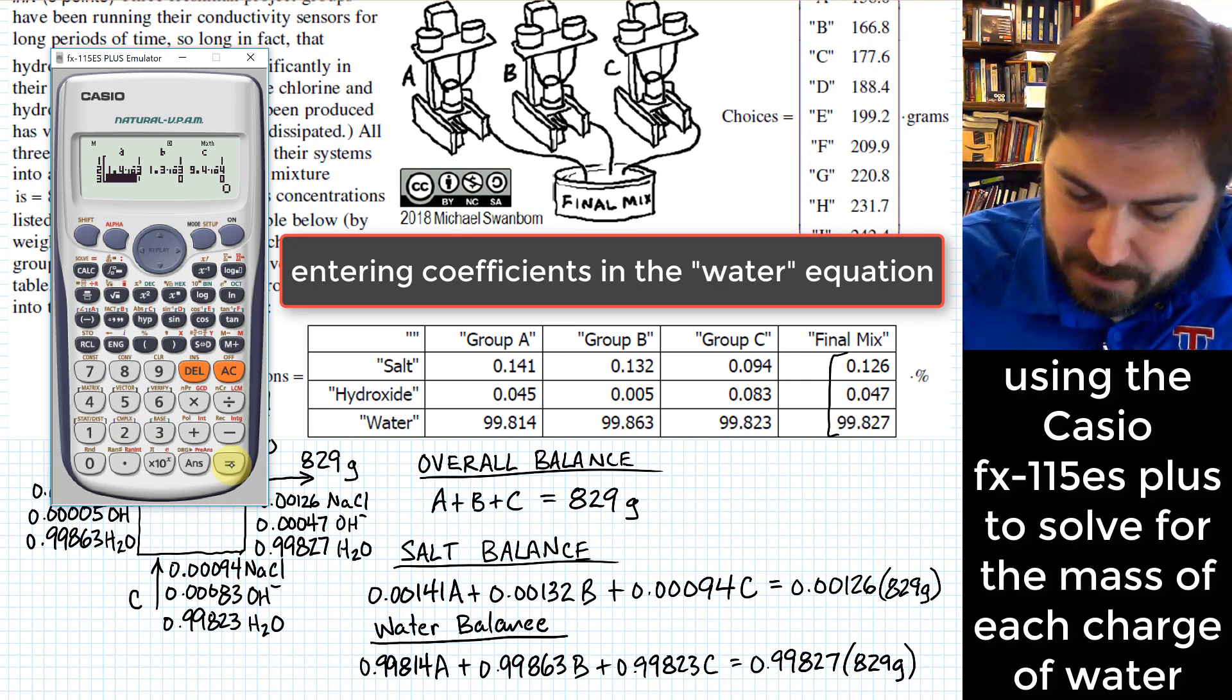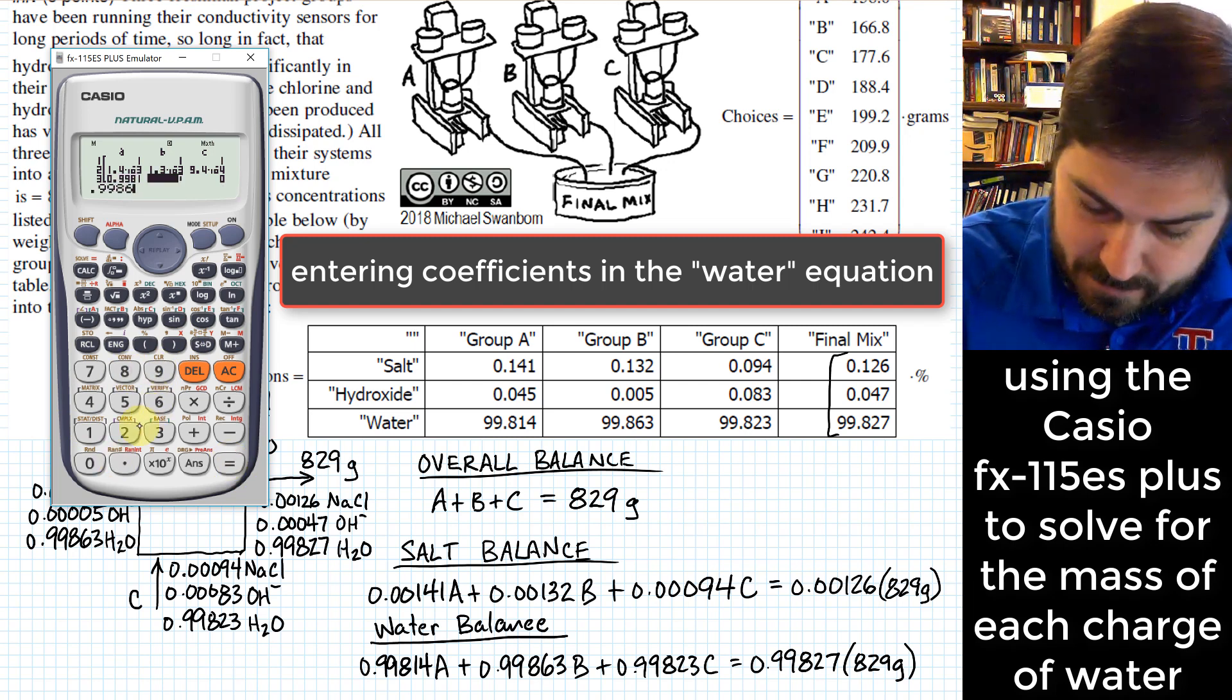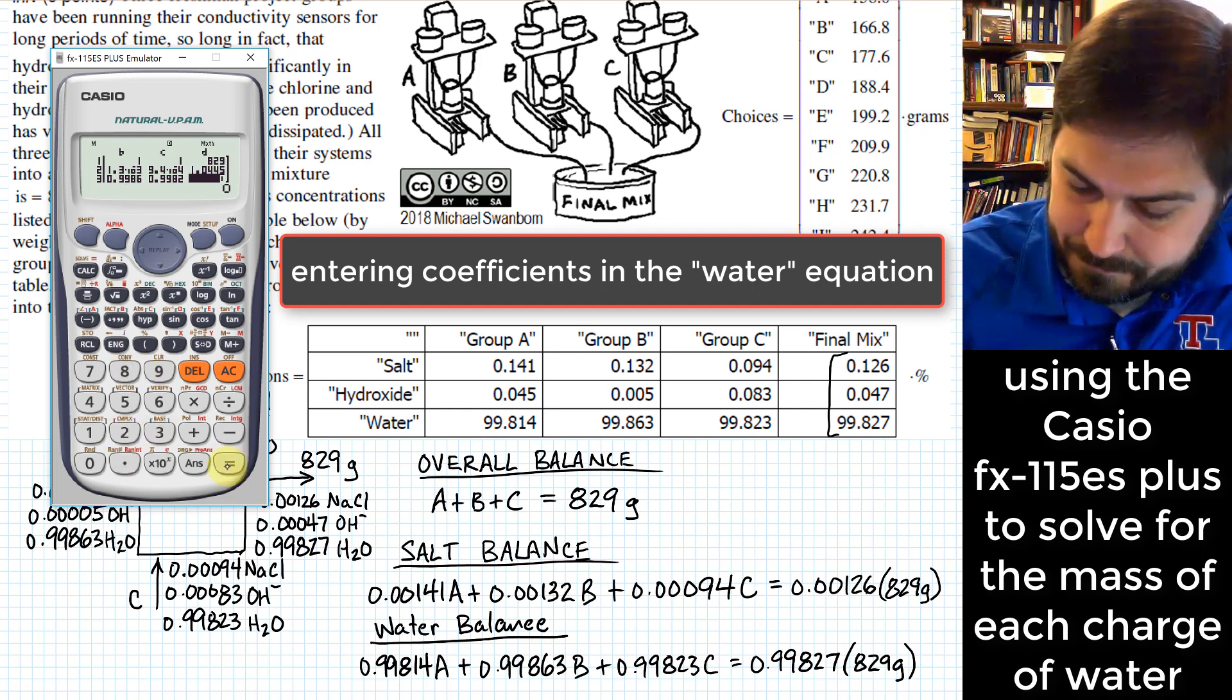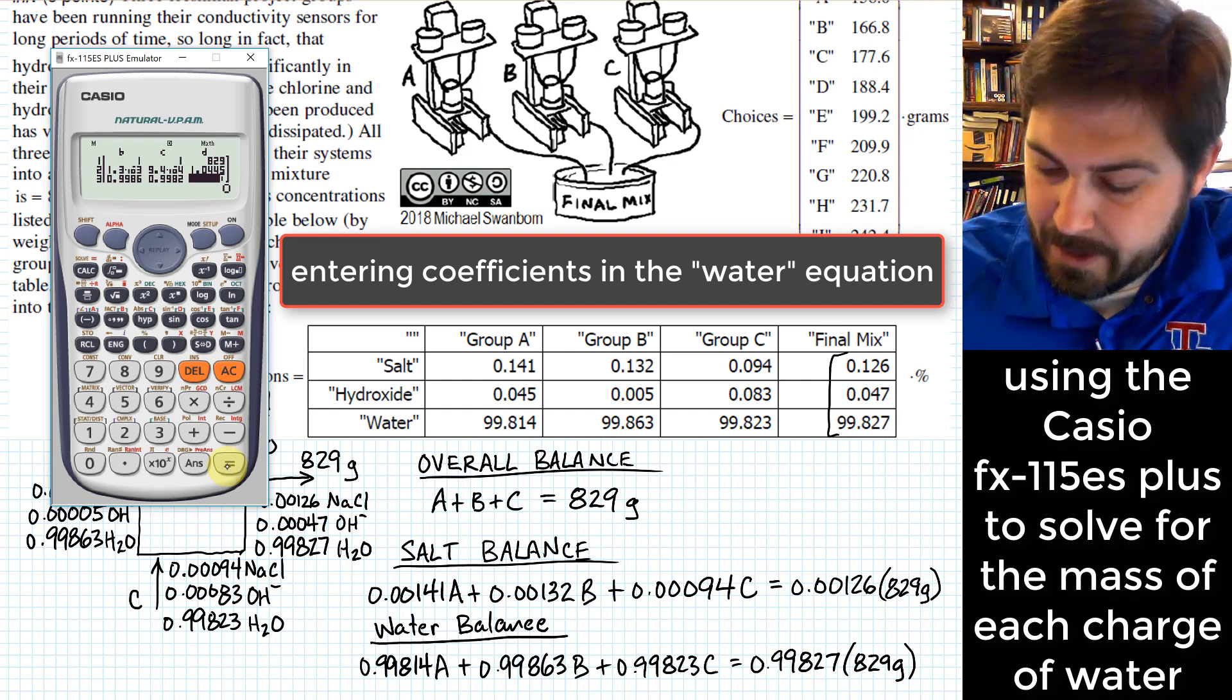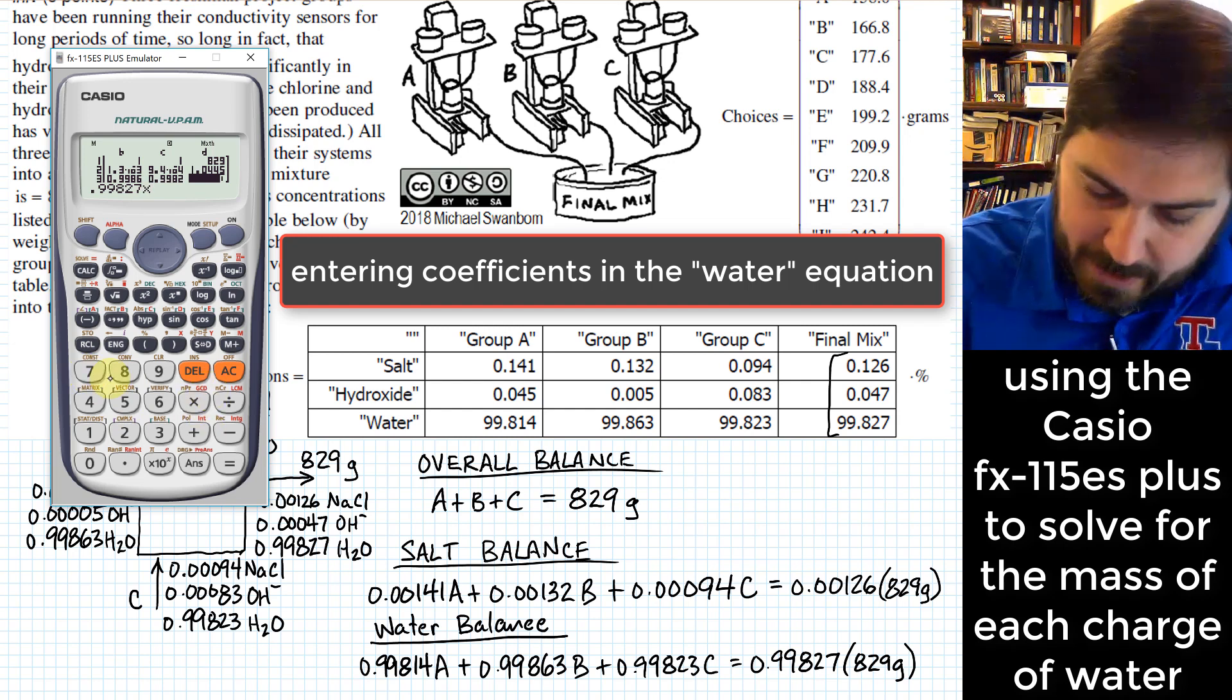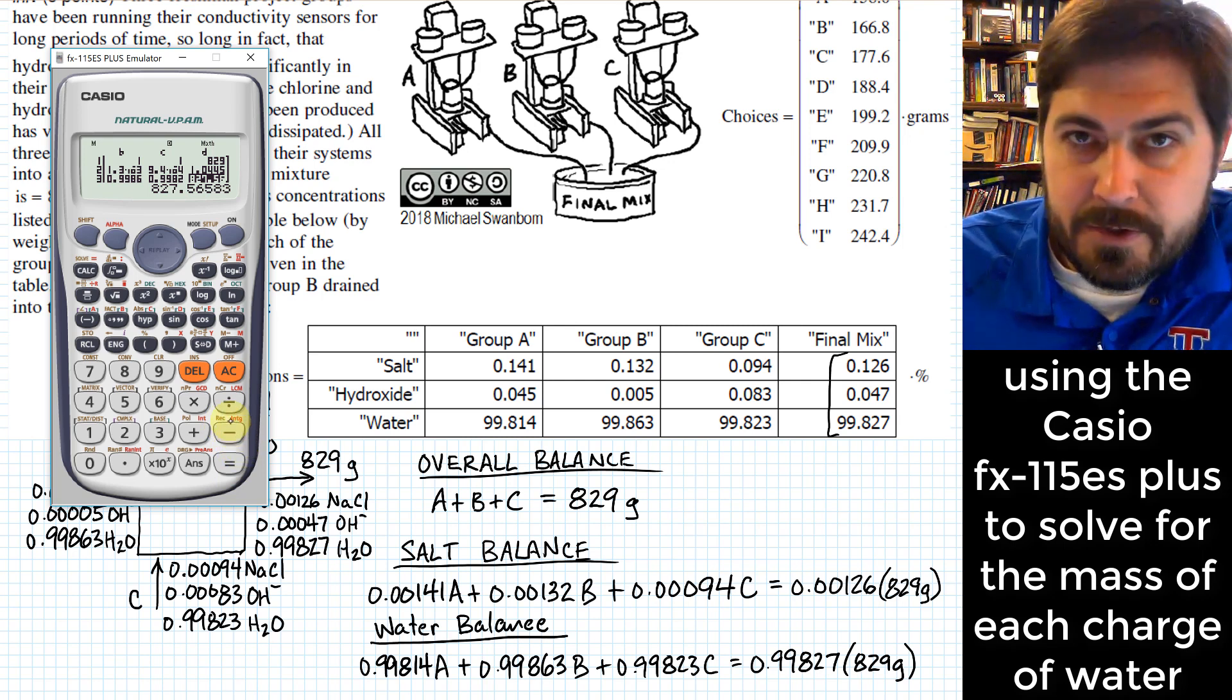Lastly, we have the water balance equation. So for this, I'll put in 0.99814. I'll put in 0.99823. And then on the right-hand side of the expression, I'll have 0.99827 times, I think I've got an extra 9 in there, 0.99823.